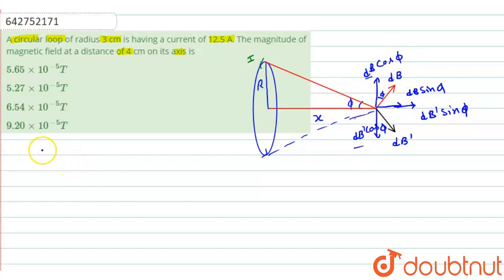Then we can find the value of magnetic field. It will be equal to integration dB sin phi, and we get B is equal to mu naught i r square divided by 2, r square plus x square raised to the power 3 by 2.